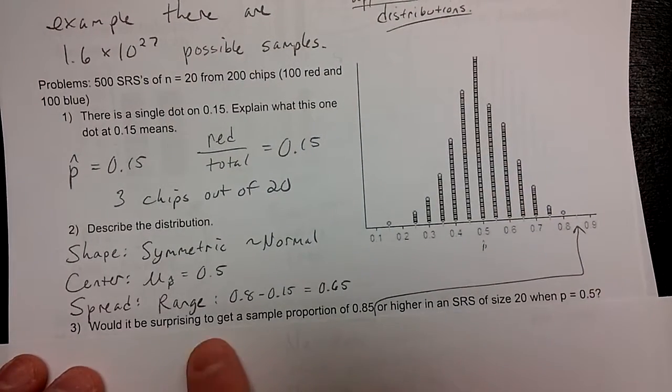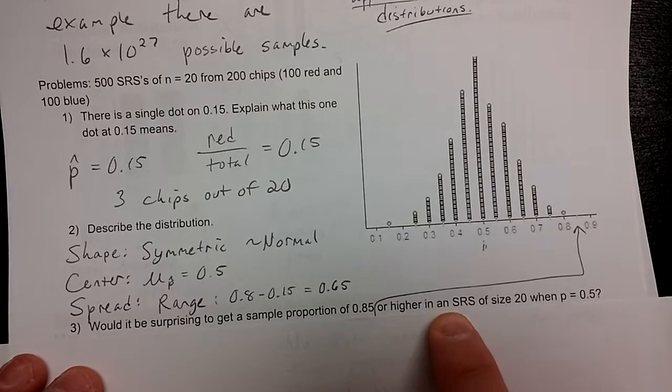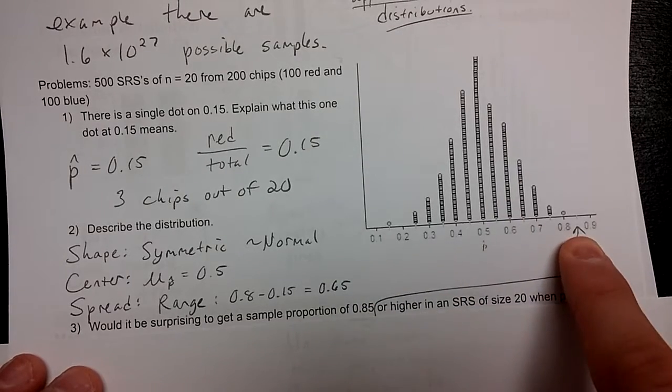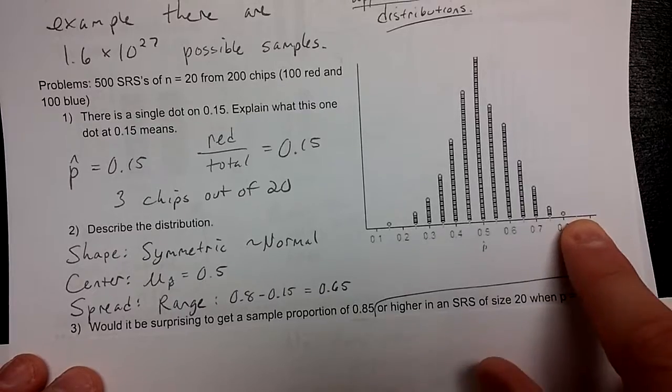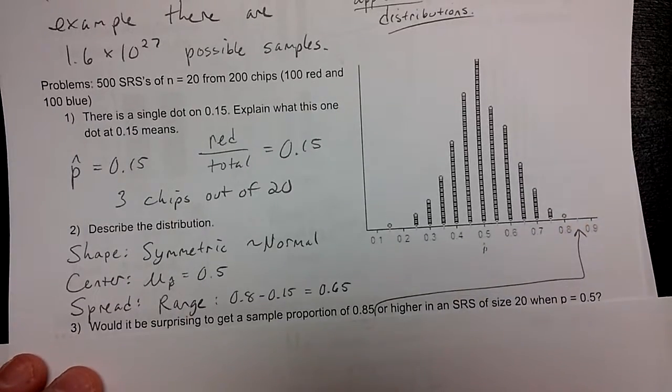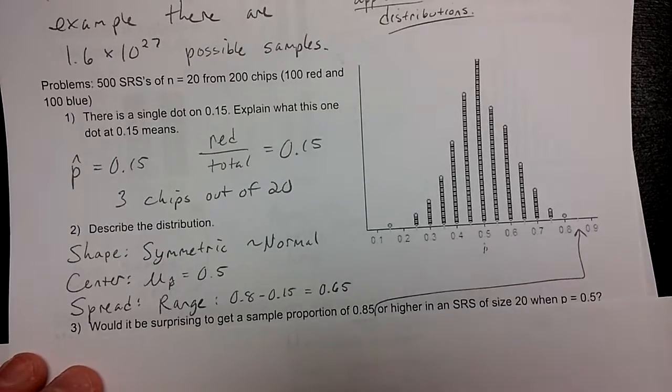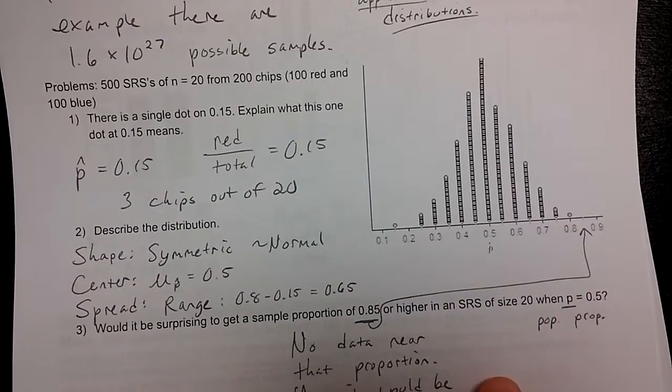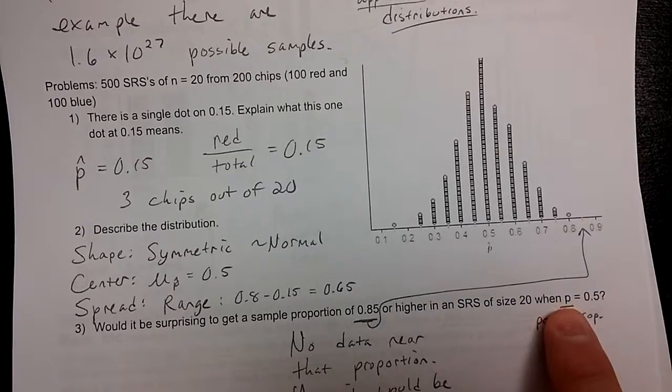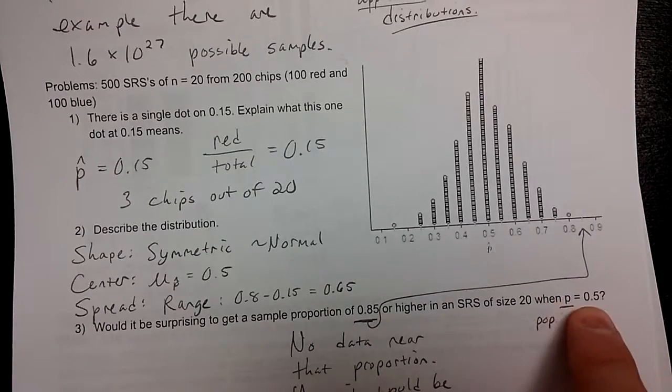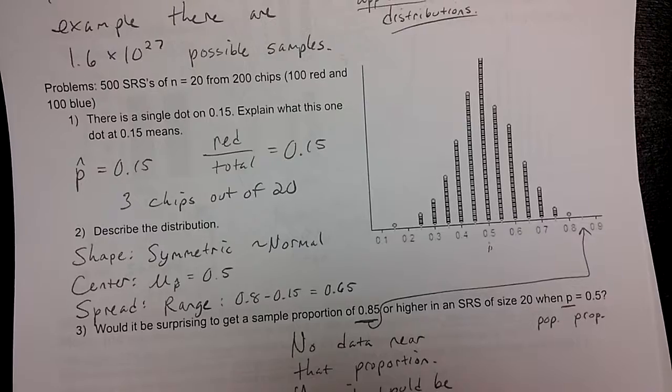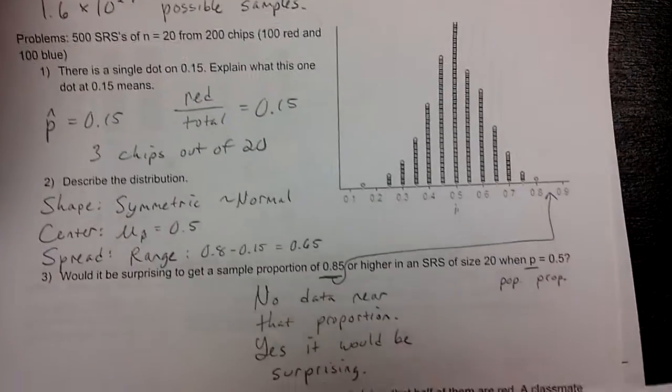This question asks you, would it be surprising to get a sample proportion of 0.85 or higher in an SRS of size 20 when p equals 0.5? That's the situation right here. 0.85, as I've pointed to you with an arrow here. There's no dots representing any samples there. So out of 500 total samples, none of them achieved a p hat value as high as 0.85. So it would be very surprising. Since there's no data near that proportion, it would be very surprising for that to happen. And just a reminder, regular p is population proportion. So p equals 0.5. That is from 100 chips out of 200 chips being red. That's half.